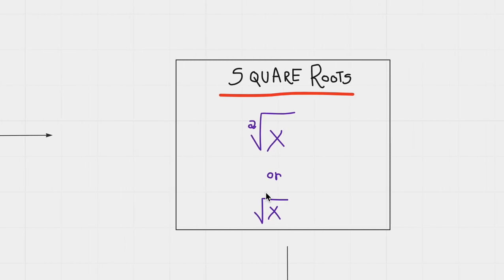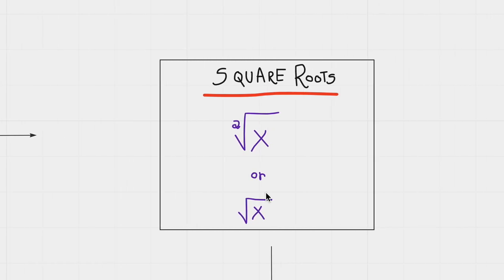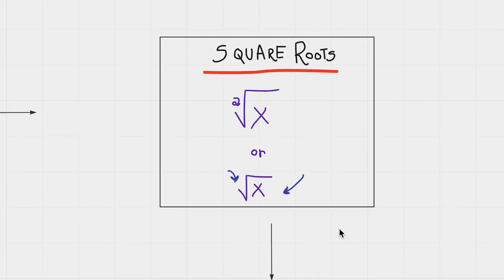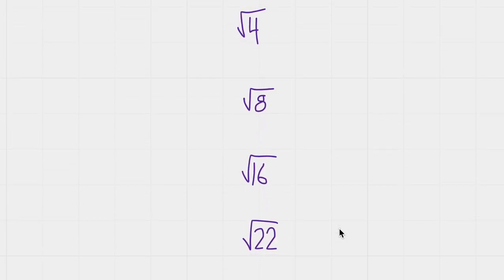So let's look into square roots. A square root can be written with a 2 as the nth root number, or it can be written like this. Anytime a symbol is shown without any number outside the radical sign, it means that it's a square root. So let's try some examples.